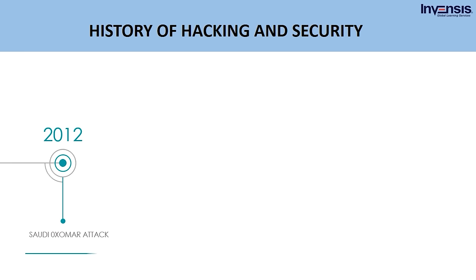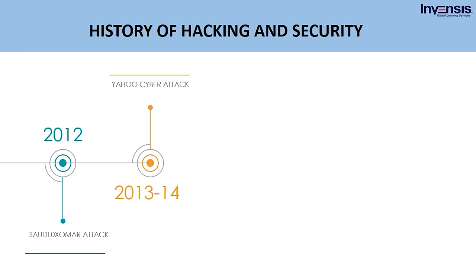In 2012, an online battle emerged between Saudi Arabia and Israel. A Saudi hacker called 0xOMAR posted details of 400,000 Saudi citizens' credit cards on the internet. As a retaliation, Israeli hackers broke into the websites of two major Arab banks. In 2013 and 2014, there were two different data breaches on the Yahoo servers, conducted by an unauthorized third party. It was believed that almost 3 billion user accounts were affected during this period.